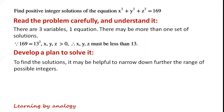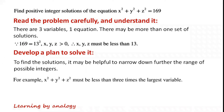To find the solutions, it may be helpful to narrow down further the range of possible integers. For example, x squared plus y squared plus z squared must be less than three times the largest variable squared.